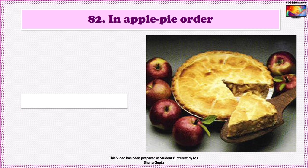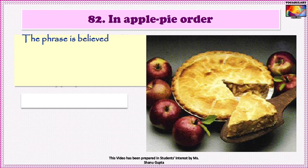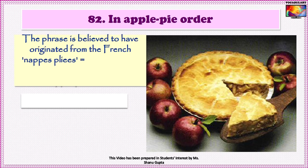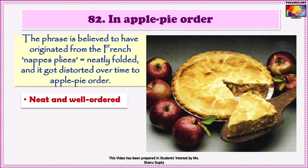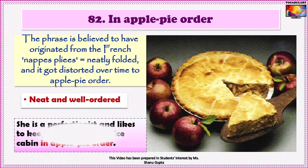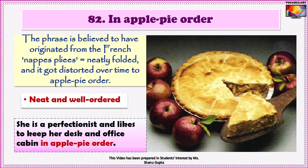Idiom number 82 is 'In apple pie order.' The phrase is believed to have originated from the French 'nappe pliée,' which means neatly folded, and it got distorted over time to 'apple pie order.' The idiom means neat and well ordered. For instance: 'She is a perfectionist and likes to keep her desk and office cabin in apple pie order.'